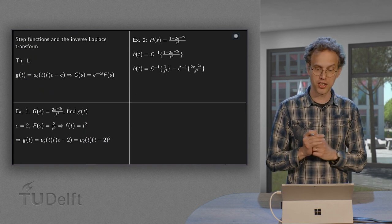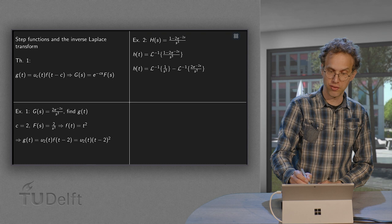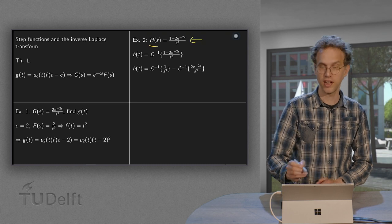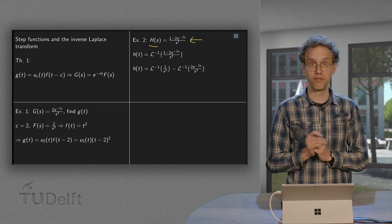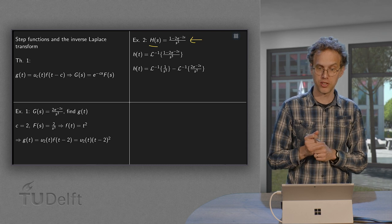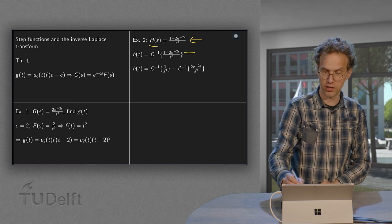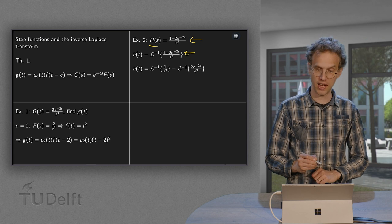Now let's do one more example. So we have an h of s equals this function over here. There's an exponential in front of it, so you have to come up with some tricks. So h of t is the inverse Laplace transform of capital H of S.